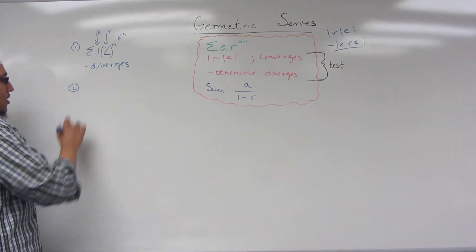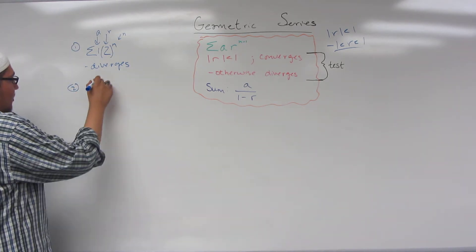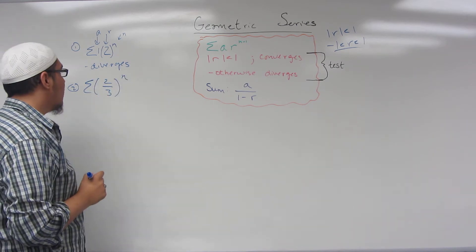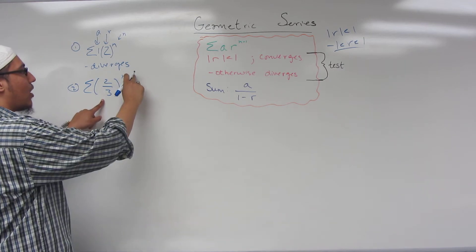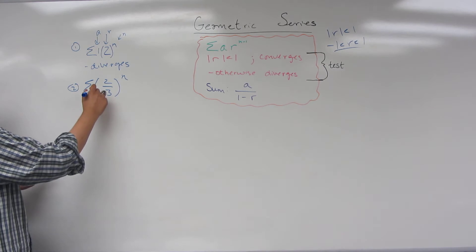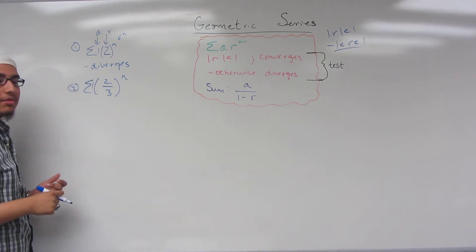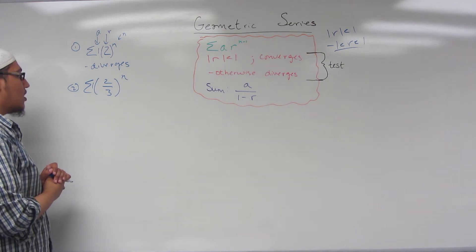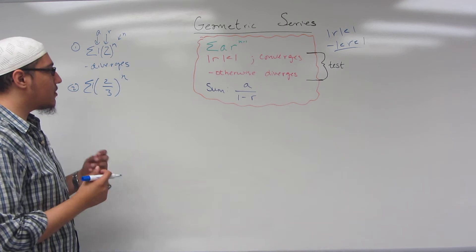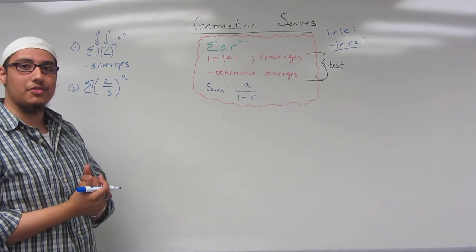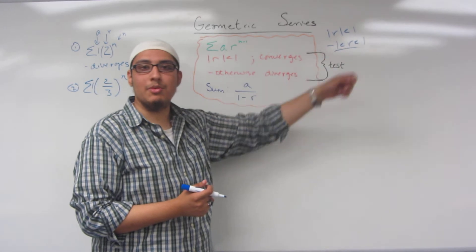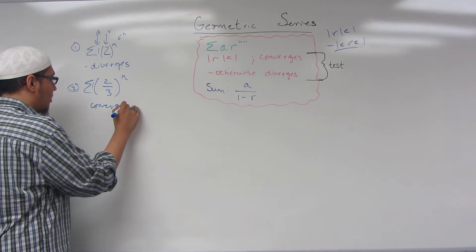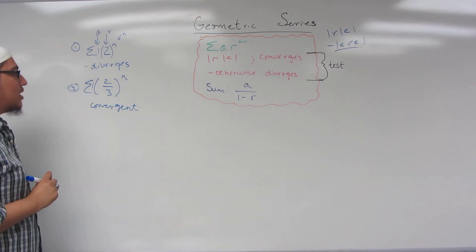Let's go on to the next example: sigma of 2 thirds to the N. Again, we have an R term raised to some power, and A can simply be 1. Is this series convergent or divergent? The first question to ask for a geometric series is: does my R lie between negative 1 and 1? 2 thirds does lie in that interval, therefore this is convergent by the geometric series test.